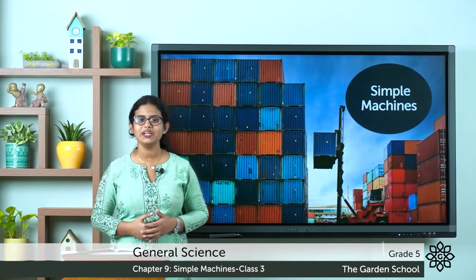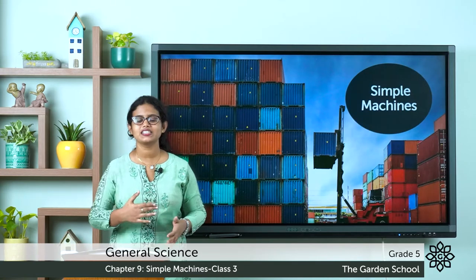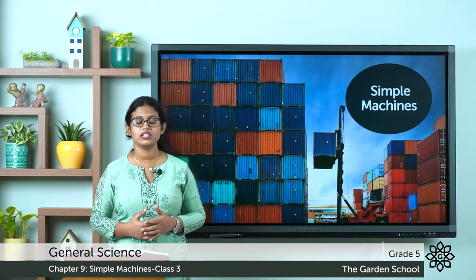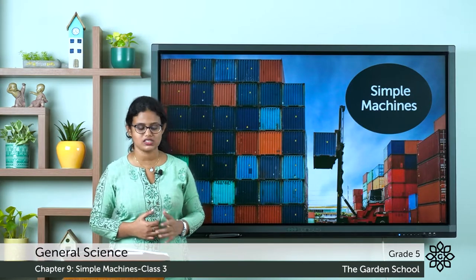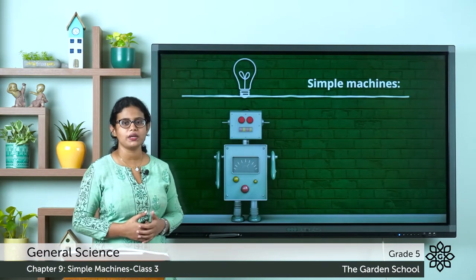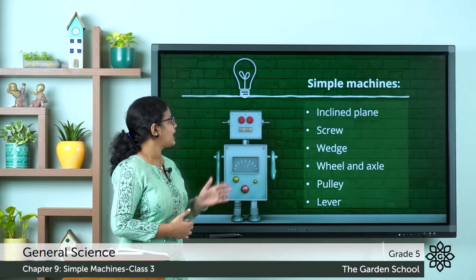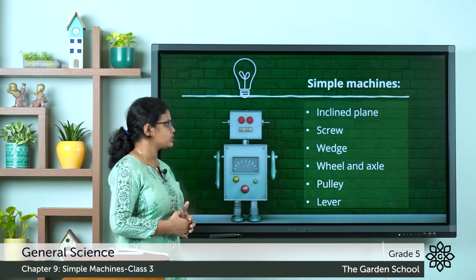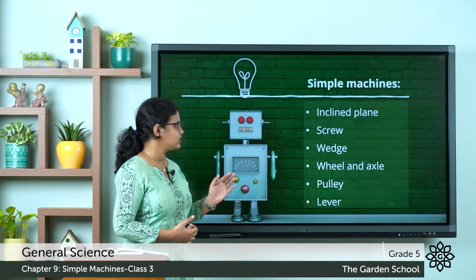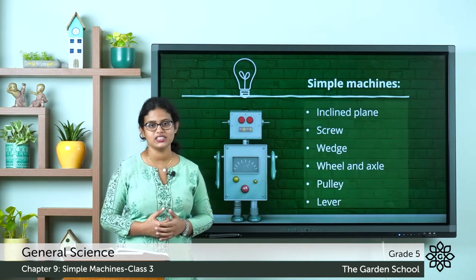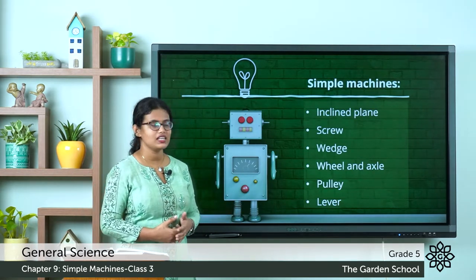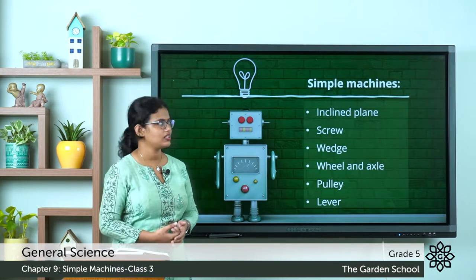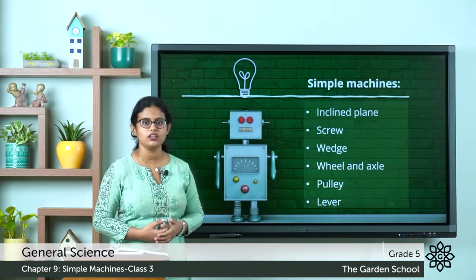Good morning everyone. Today let's discuss the types of simple machines: inclined plane, screw, wedge, wheel and axle, pulley, and lever. We have already discussed the first two simple machines — inclined plane and screw.